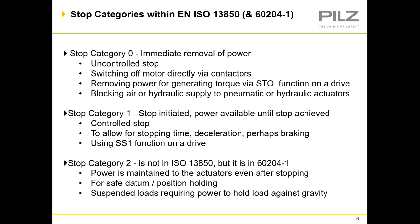Stop category 1: stop initiated, power available until stop is achieved — this is a controlled stop. This allows for machine stopping times, time delay stops, deceleration and braking used with control systems to indicate machinery is stationary. It may be used for fast moving machinery to protect the machine. It could have instant operational contacts along with time delay contacts, and it's achieved using the SS1 function on a variable speed drive.